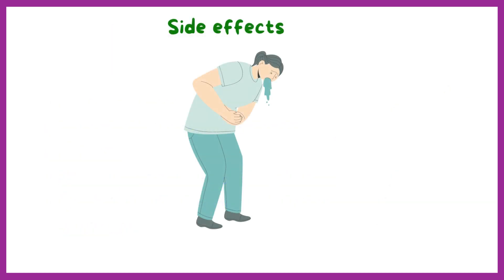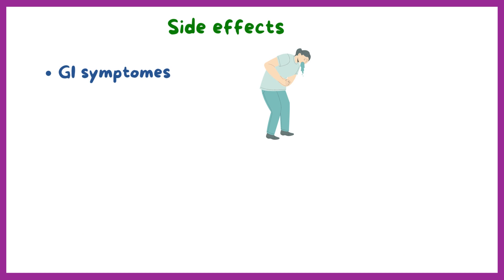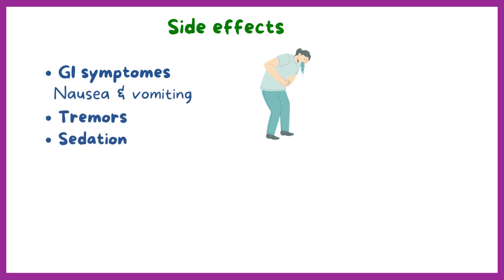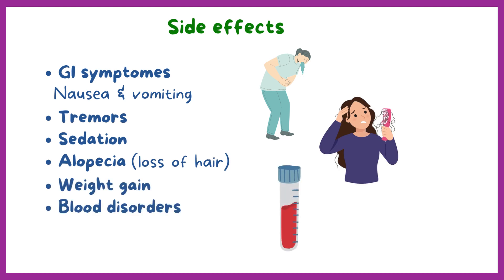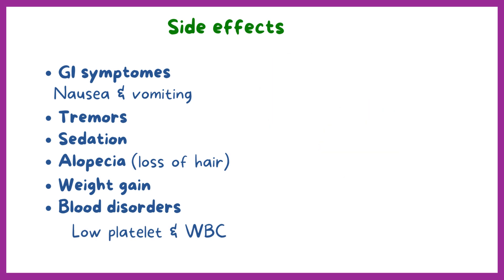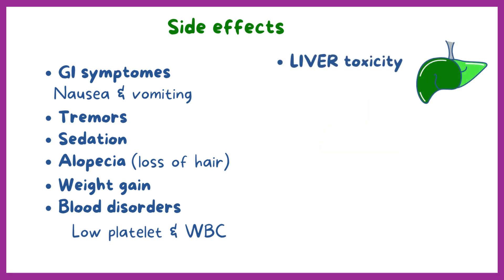Common side effects of valproic acid are gastrointestinal symptoms like nausea and vomiting, tremors, sedation, alopecia or loss of hair, weight gain, and blood disorders like a low platelet and white blood cell count. A rare but life-threatening adverse effect is liver toxicity.